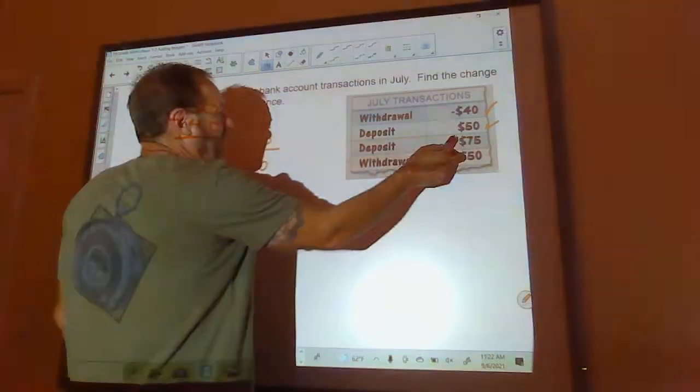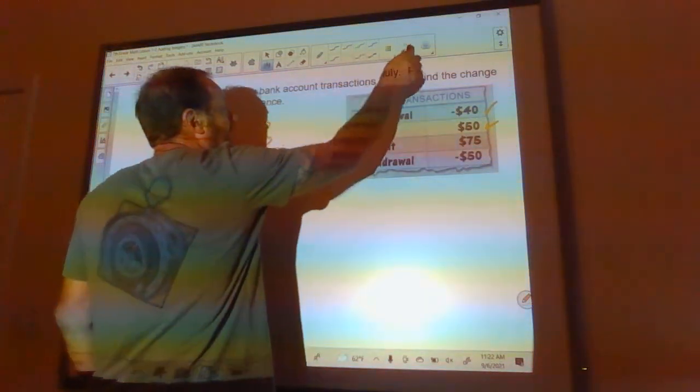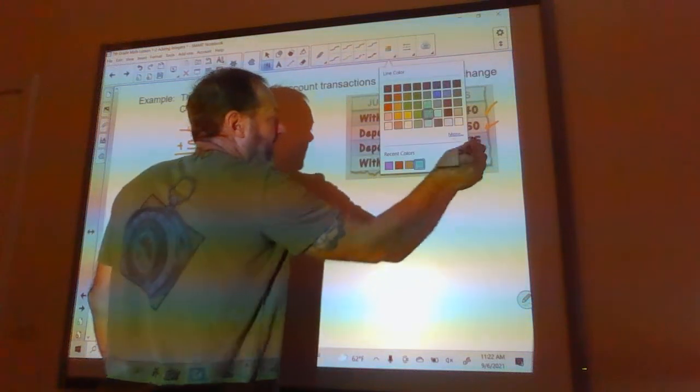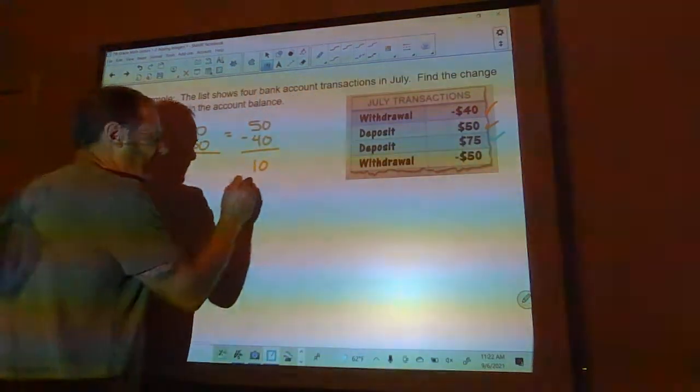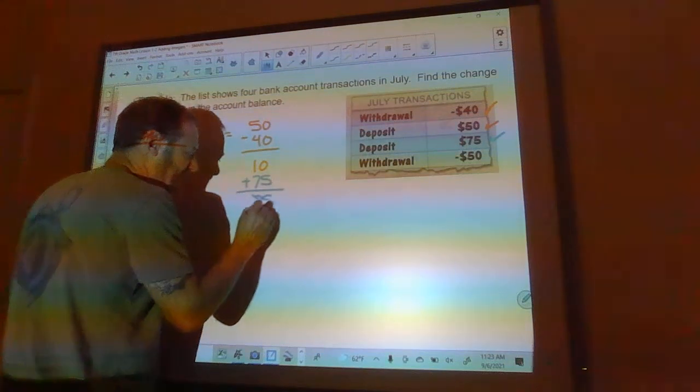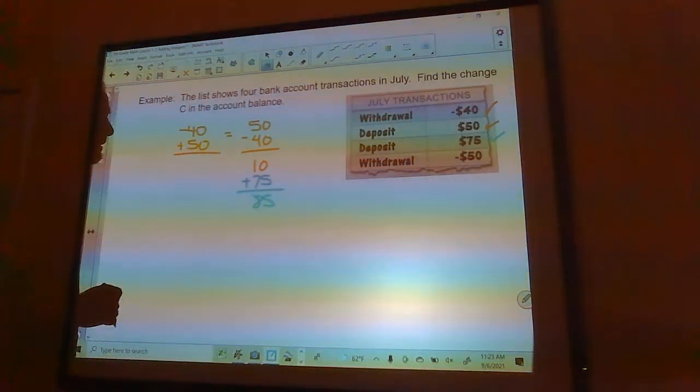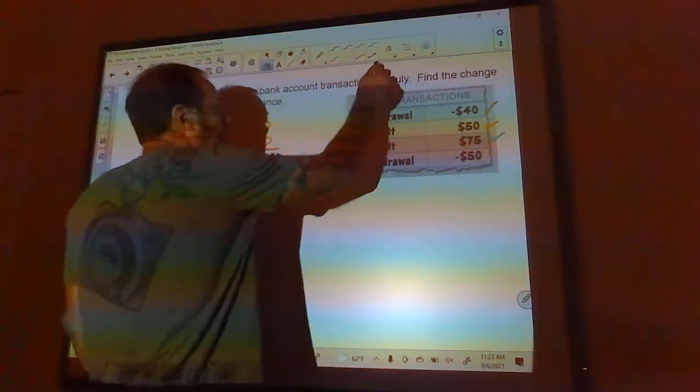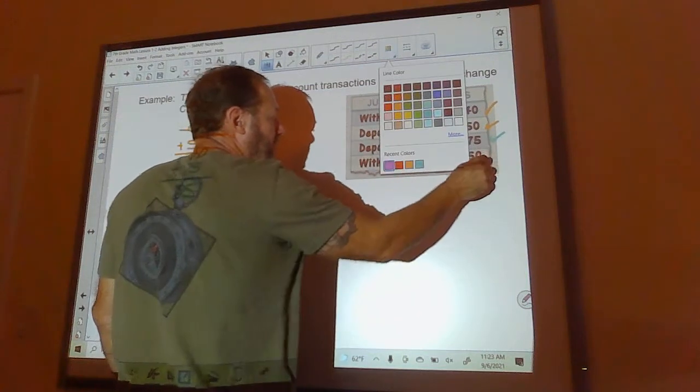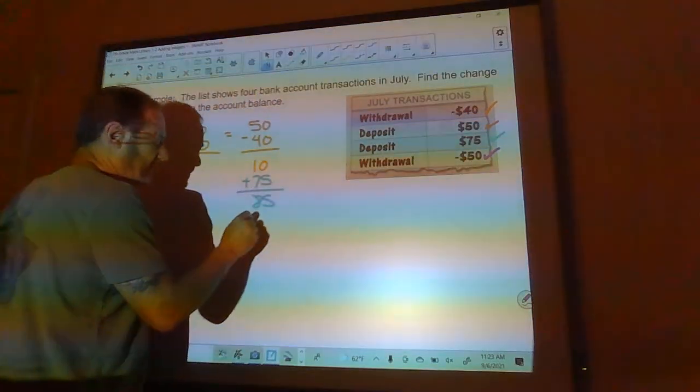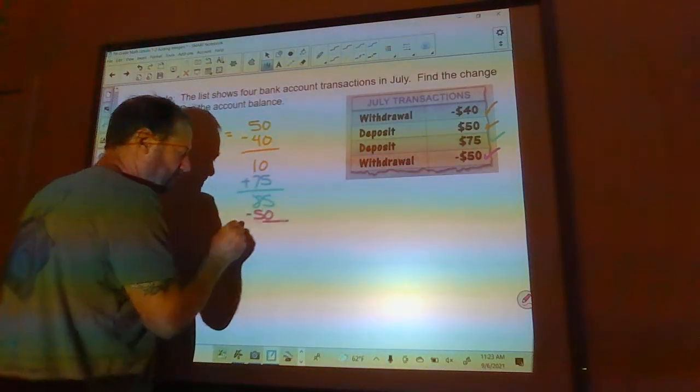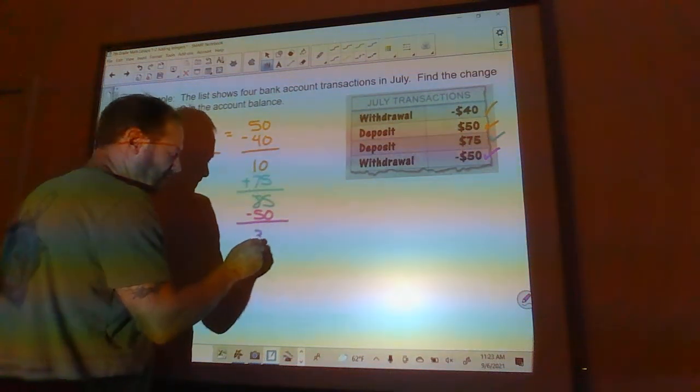Okay, now deposit, I'm adding a number, so I'm going to go ahead and add 75 here. So that's 85. And then I'm going to subtract 50 because I withdrew money, which means I took it out, and I'm left with 35.